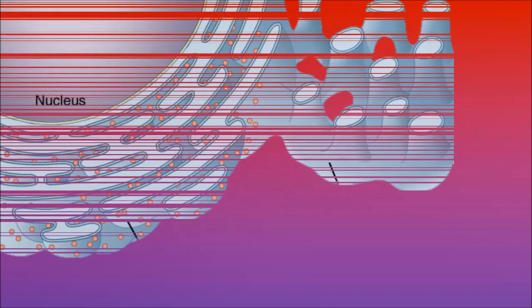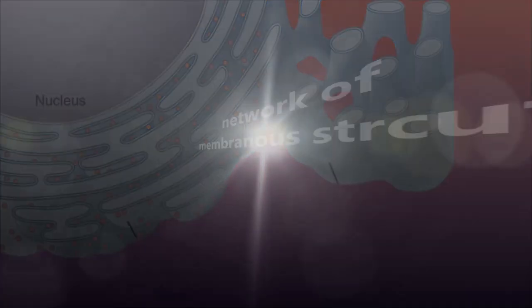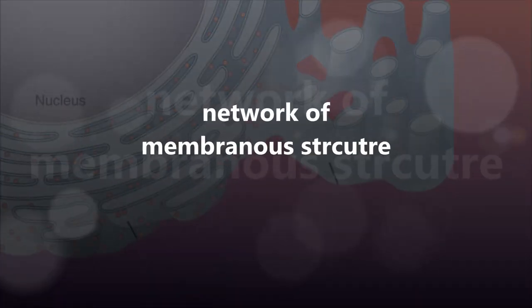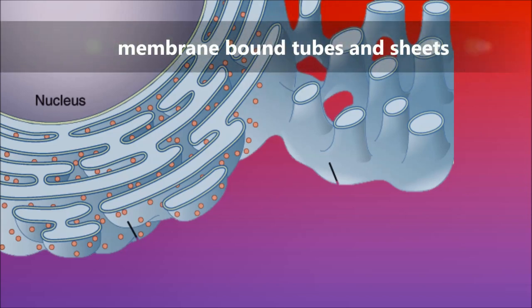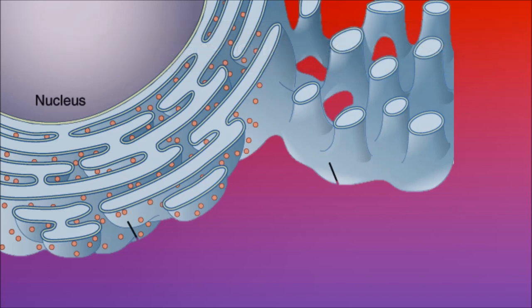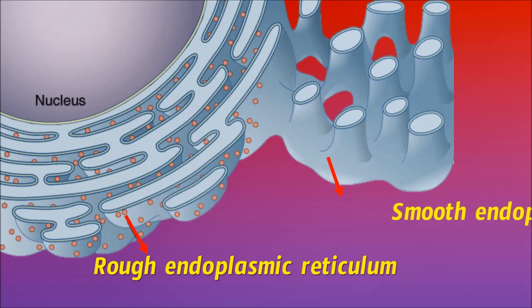When a cell is observed under an electron microscope, a network of membranous structure is found, known as endoplasmic reticulum. It is a large network of membrane-bound tubes and sheets. The membrane resembles the structure of plasma membrane. It is of two types: rough endoplasmic reticulum and smooth endoplasmic reticulum.